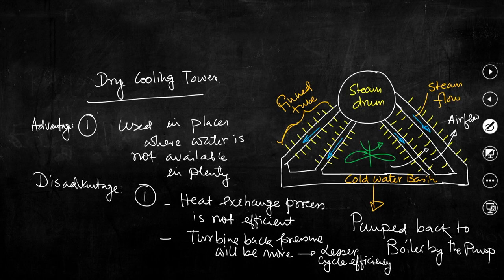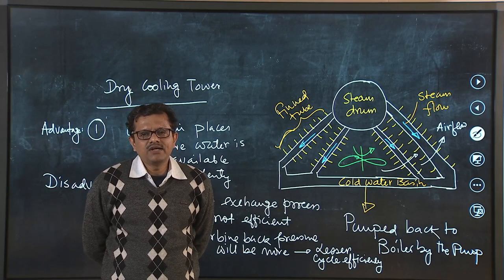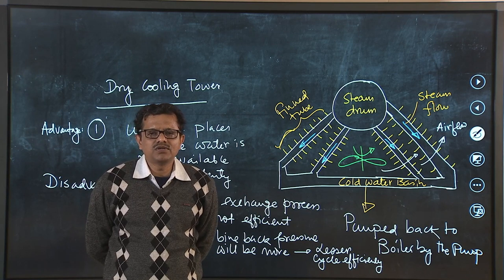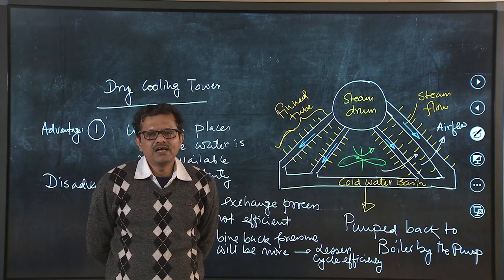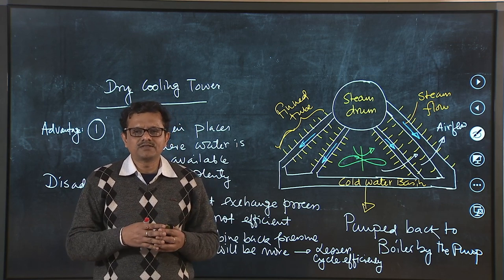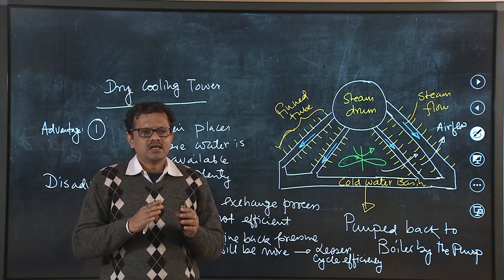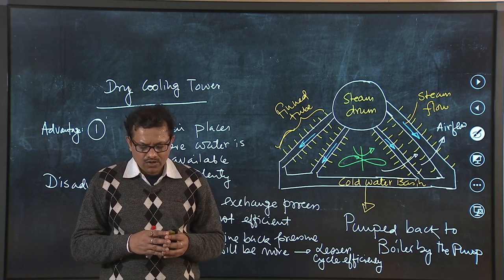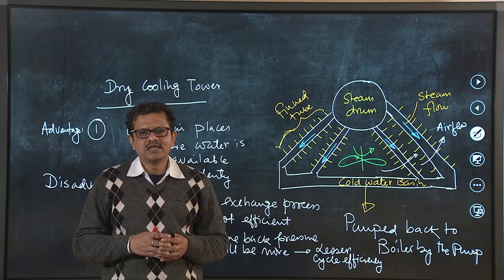The dry cooling tower, despite these disadvantageous features, has promising potential to be used in places where water is not available in plenty. So to summarize: today we have discussed about the cooling tower — the role of the cooling tower, then the classification of cooling tower, and for each type we have analyzed the mechanism of heat transfer together with the merits and demerits associated with each type. With this I stop here today and we shall continue our discussion in the next class. Thank you.